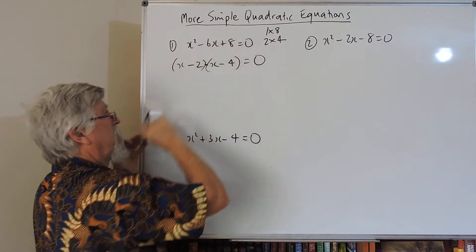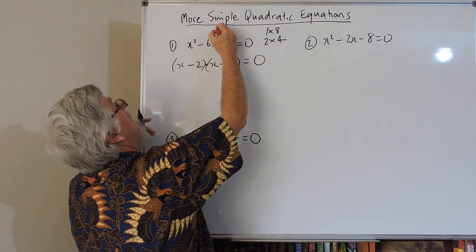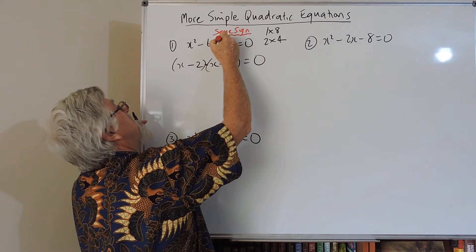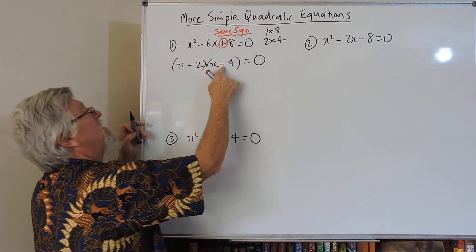This symbol here tells us that the signs have to be the same. So the plus there tells us that we've got the same sign.